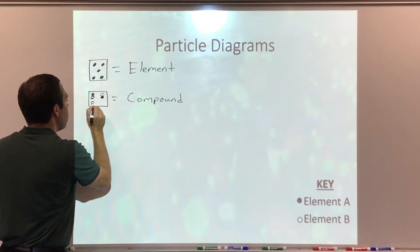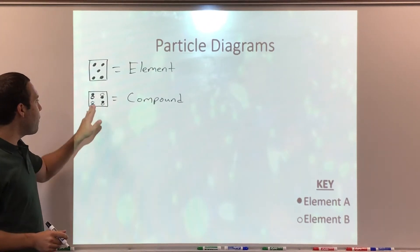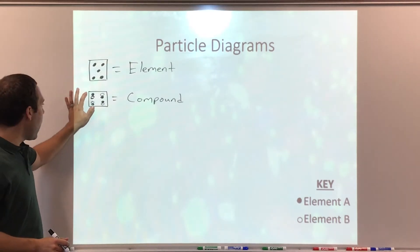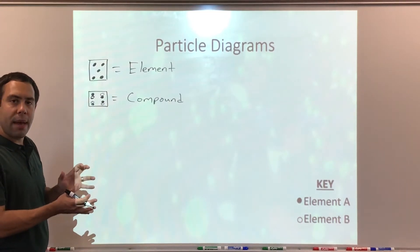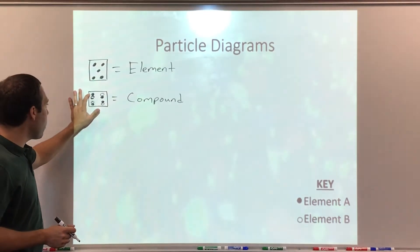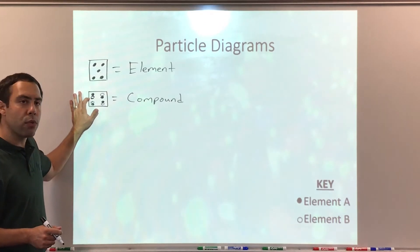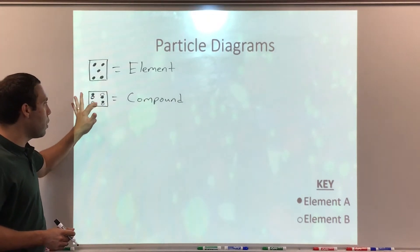One shaded, one open circle. And one open, one shaded circle. So I have four of the same compound — two different elements, element A and element B, combined chemically in a fixed proportion. All four of these have a 1A to 1B ratio: 1 to 1.